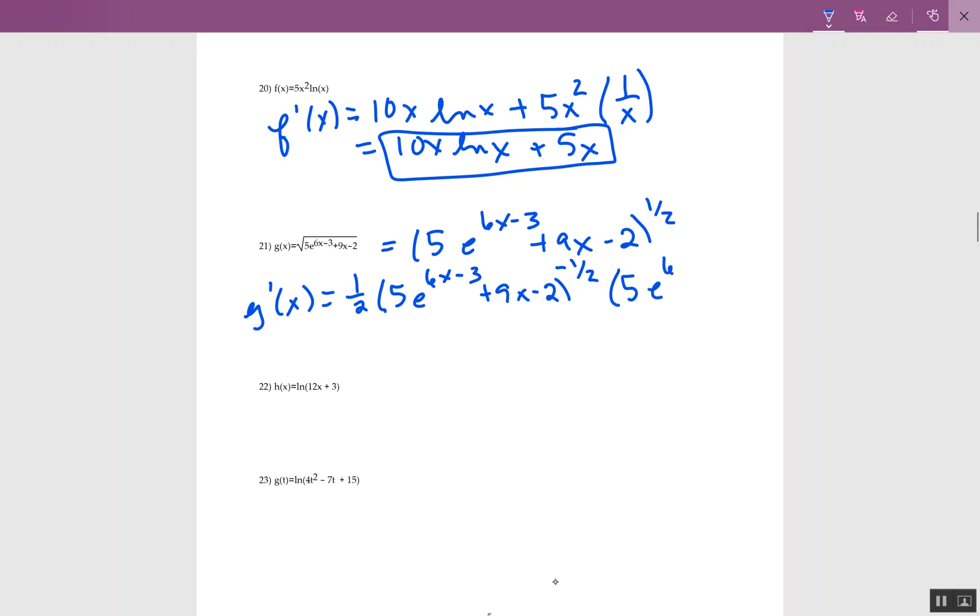Back inside, I have 5e to the 6x minus 3, then times the derivative of 6x minus 3, which is 6, and then plus 9. It's really important that you multiply this 6 right beside the e, not after you go to the 9x. So it has to be right now, right by the 5e to the x is the 6.